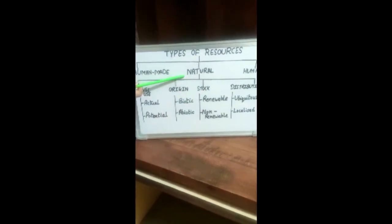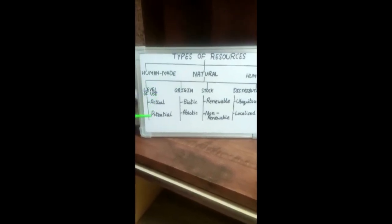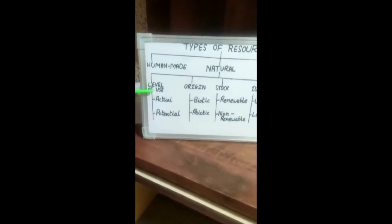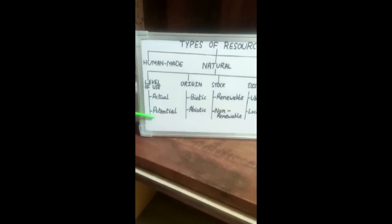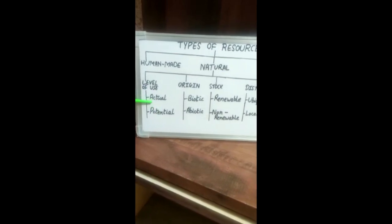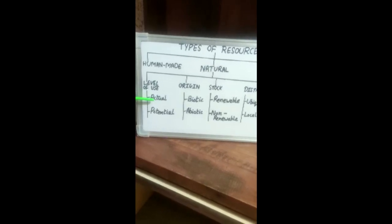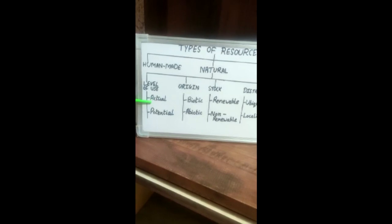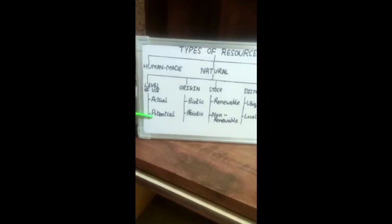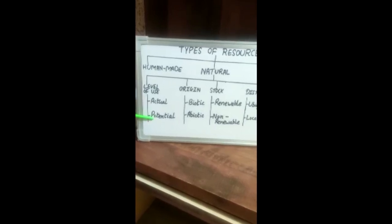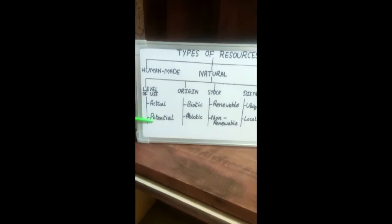Natural Resources can be further classified on four different bases. First, on the basis of level of development and use, Natural Resources are Actual and Potential Resources. Actual Resources are those which are being used in the present and whose quantity is known — for example, petroleum in West Asia. Potential Resources are those which might not be a resource in the present but can become a resource in future — for example, uranium in Ladakh is potentially a resource.